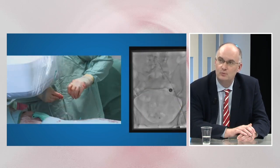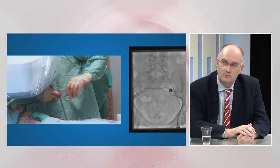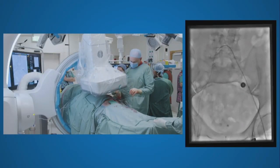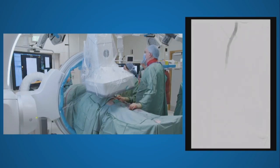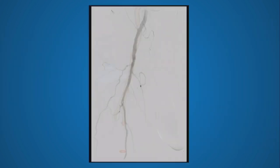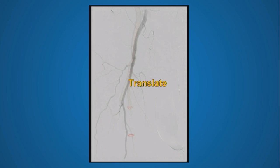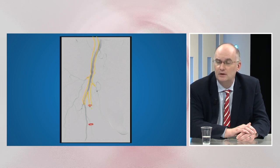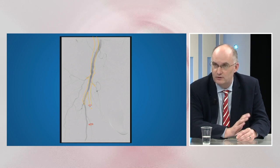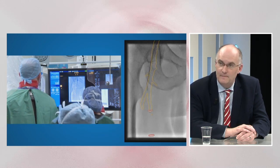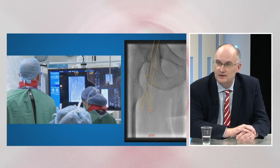Up and over we went — wire down the iliacs, angiogram shot. The challenge on this other side was just getting into that short SFA stump, about two centimeters long. Technically feasible but a little challenging with long wires. We again had our fusion system set up to marry the CT angio and on-table images together to mark the target of the superficial femoral artery. With fairly minimal manipulation we were happy that we'd gotten into the superficial femoral artery.